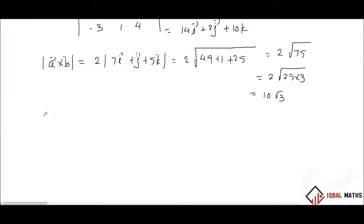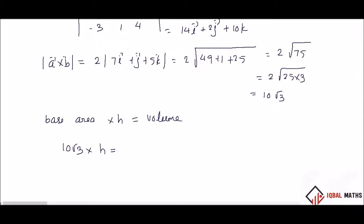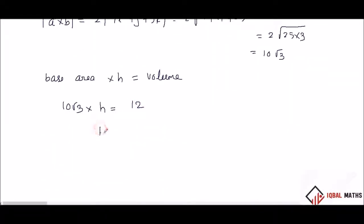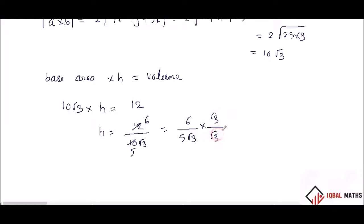Volume equals base area into height. Base area equals 10 root 3. Volume equals 12. Height equals 12 by 10 root 3, which is 6 by 5 root 3. Rationalizing by multiplying root 3 by root 3 — this is the conjugate — gives 6 root 3 by 5 into 3. The answer is 2 root 3 by 5 units.